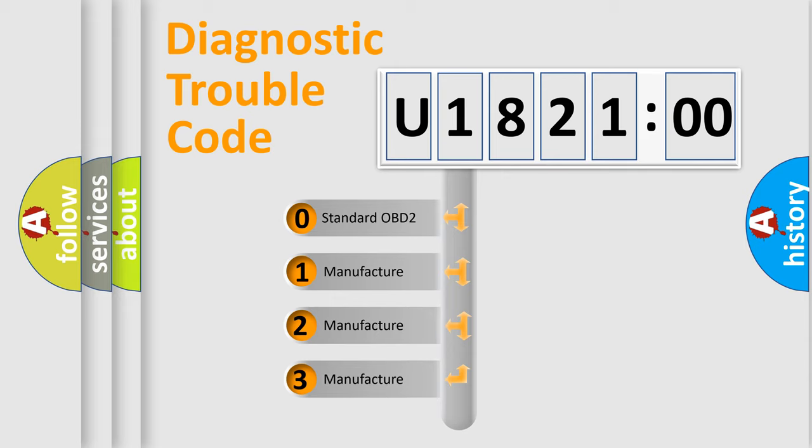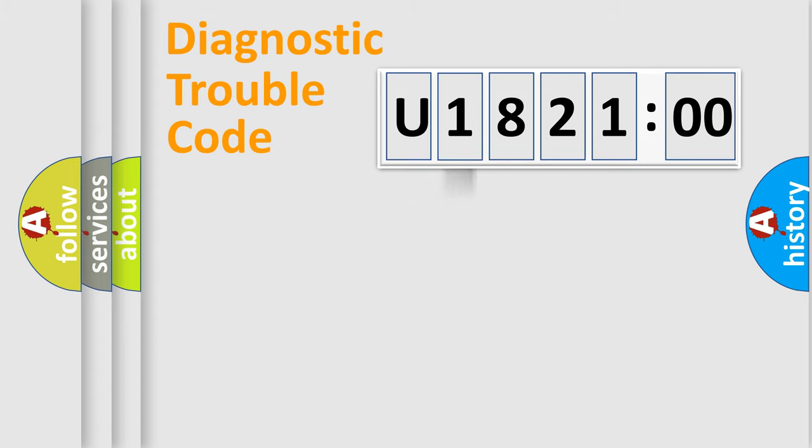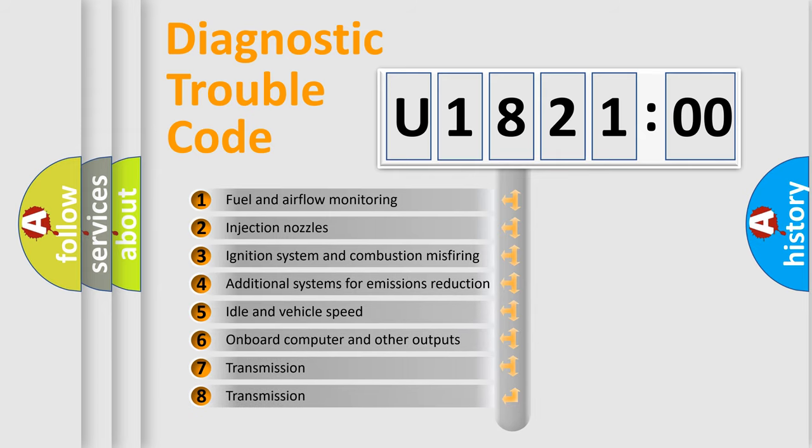If the second character is expressed as zero, it is a standardized error. In the case of numbers 1, 2, or 3, it is a more precise expression of the car-specific error. The third character specifies a subset of errors.